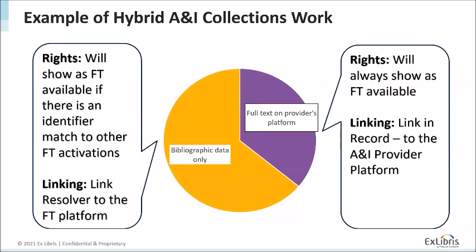Looking at a diagram: we have one CDI collection — no title list since it's a database-type. The yellow portion represents bibliographic-data-only records: rights show as full text available only if there's an identifier match to other full-text activations, and linking uses link resolver. The purple portion represents records where the ANI provider has full text on their platform: these will always show as full text available, and linking uses linking-in-record directly to the ANI provider's platform.